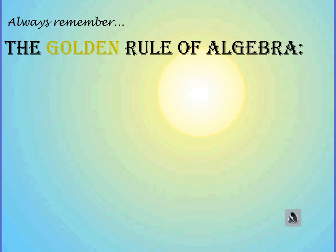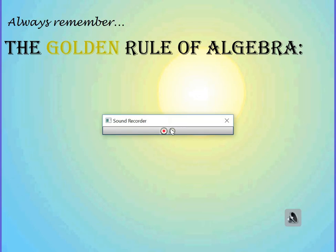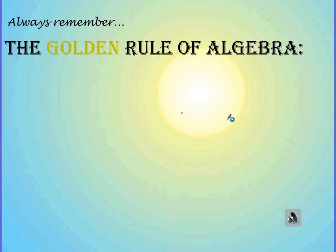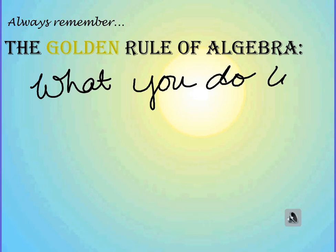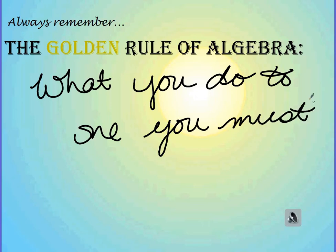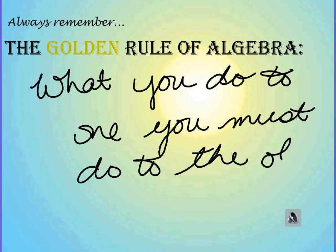So next we have the golden rule of algebra. We touched on this a little bit previously, but that golden rule of algebra is: what you do to one, you have to do to the other. This is true when it comes to numerators and denominators of fractions. This is true when it comes to the left and the right side of an equation, and so on and so forth.